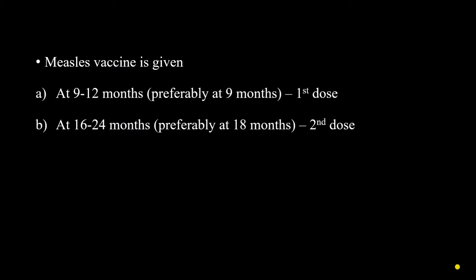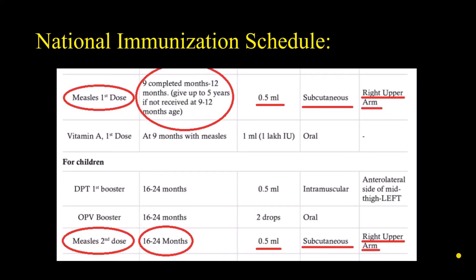By now we already know that measles vaccine is given twice. The first dose is given at 9 to 12 months, preferably at 9 months, and the second dose is given between 16 to 24 months, preferably at 18 months. If we look at the national immunization schedule, we can see it is mentioned here: measles dose 1 at 9 completed months to 12 completed months, preferably around 9 months, and measles second dose between 16 to 24 months, preferably around 18 months. In both doses the amount is 0.5 ml given as a subcutaneous injection, and the site of injection is the right upper arm to maintain uniformity.